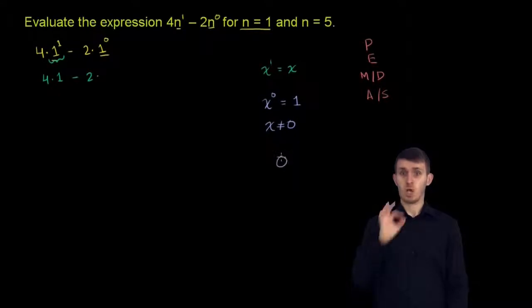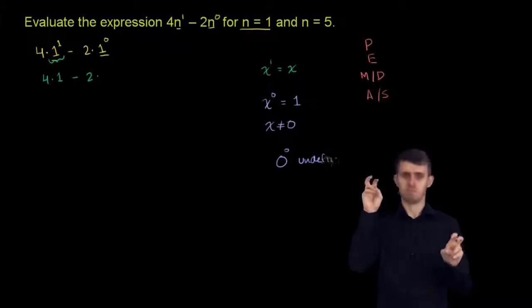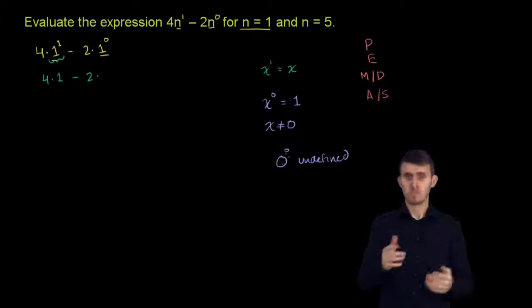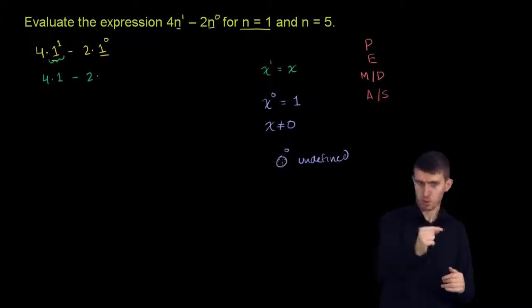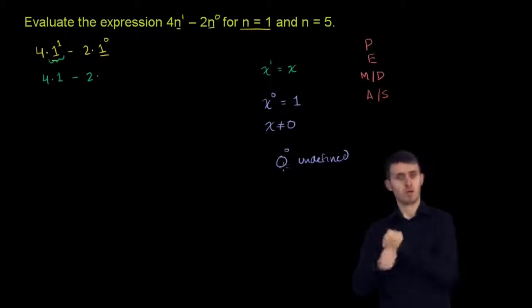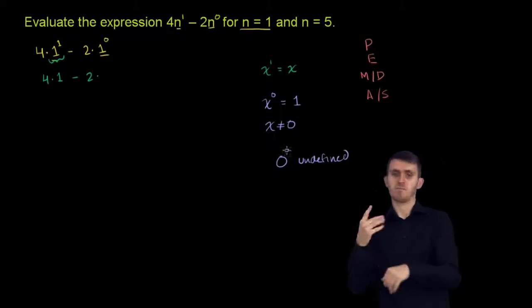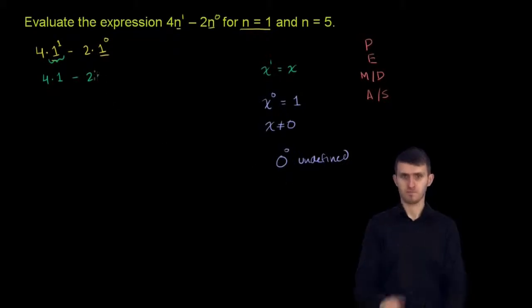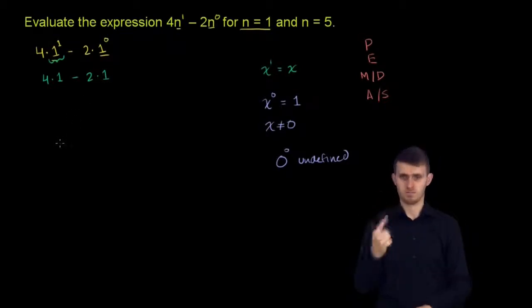I exclude 0 because 0 to the 0th power is usually undefined. Maybe in the future I'll do a video explaining why it's undefined, because there's some good arguments for why this should be 0, because 0 to pretty much any other power is 0. But then there's a really good argument for why it should be 1, because any other number to the 0th power is 1. So that's why, for the most part, we like to keep this undefined. So with that said, 1 to the 0th power is just going to be 1.